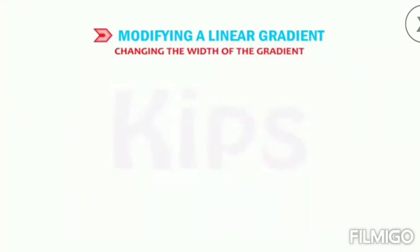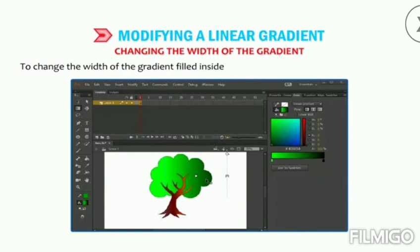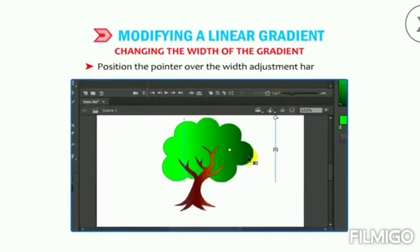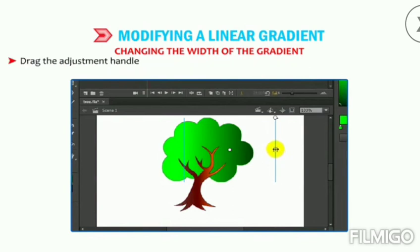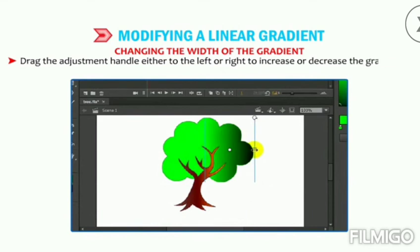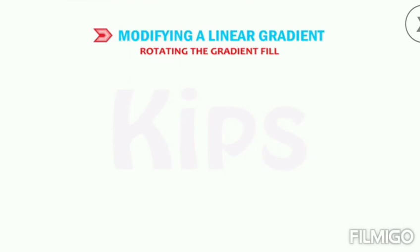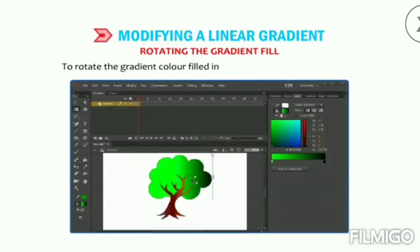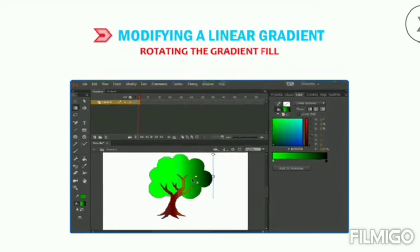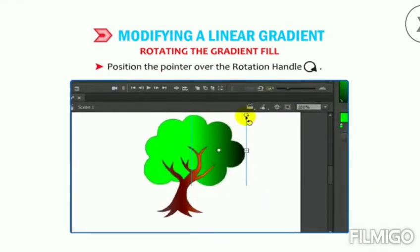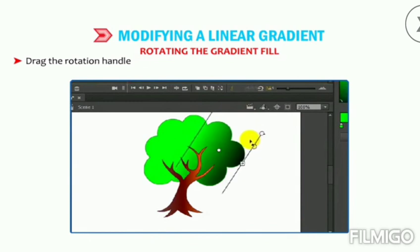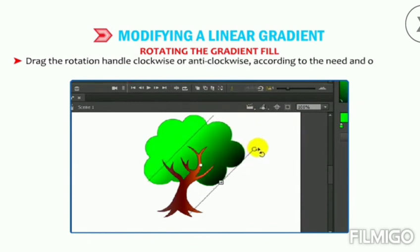To change the width of the gradient, position the pointer over the width adjustment handle — it changes to a double-headed arrow. Drag the handle left or right to increase or decrease the gradient's width. To rotate the gradient fill, position the pointer over the rotation handle — the pointer shape changes. Drag the rotation handle clockwise or anti-clockwise as needed and observe the change.